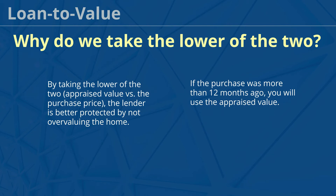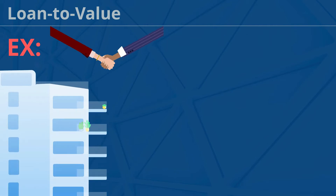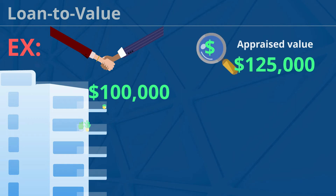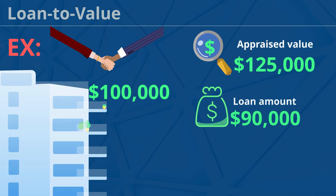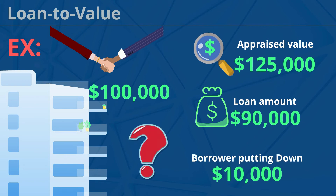Let's do an example together. A borrower is purchasing a condo for $100,000. The appraised value is $125,000 and the loan amount will be $90,000. In other words, the borrower is putting $10,000 down. What would the borrower's loan-to-value be?